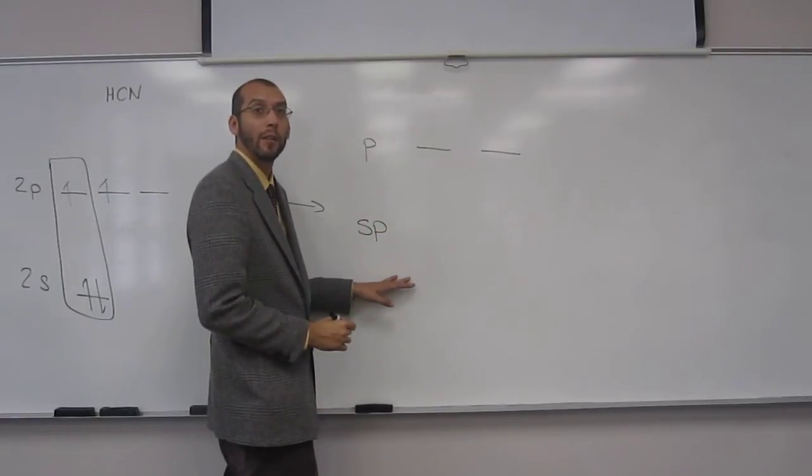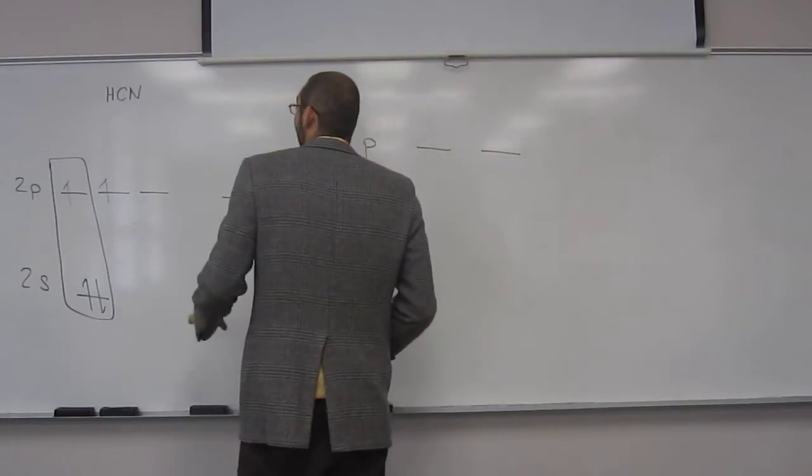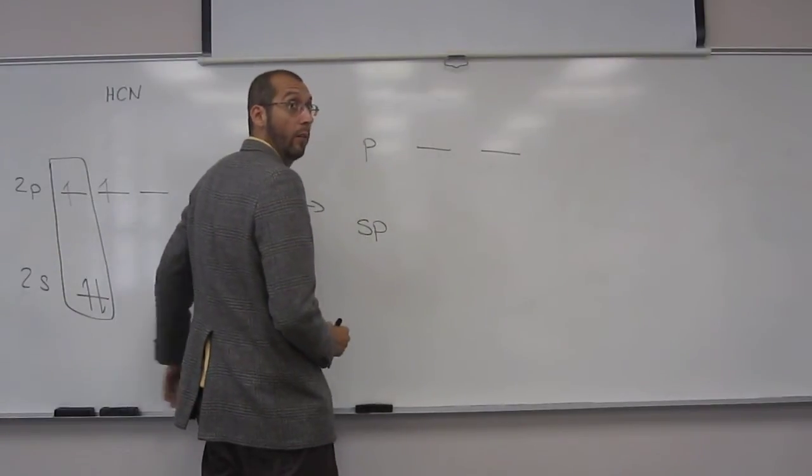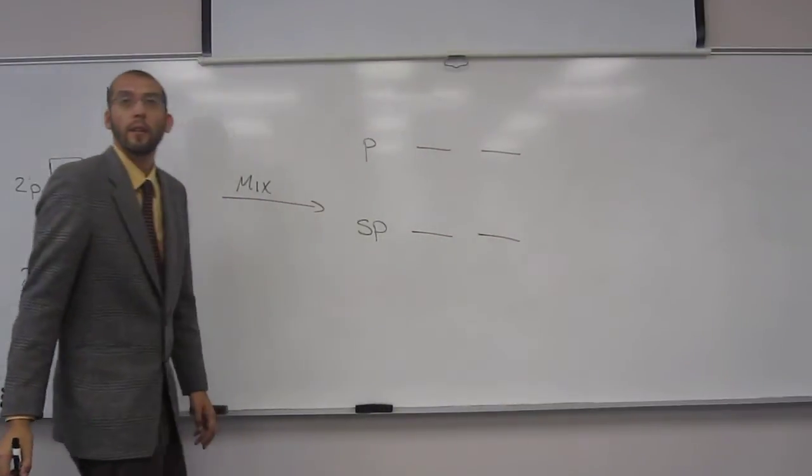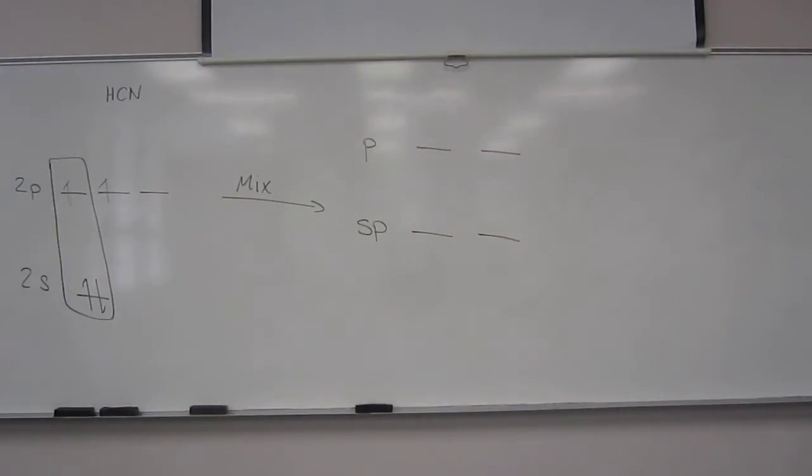How many sp's are we going to have? Two, right? Why? Because we put two in, we get two out. Okay? Does that make sense so far? So how many electrons did we start with here? Four, okay?